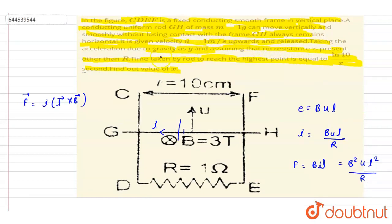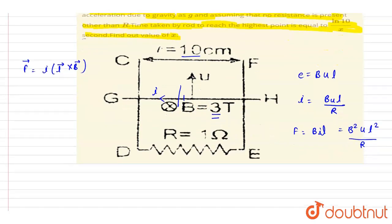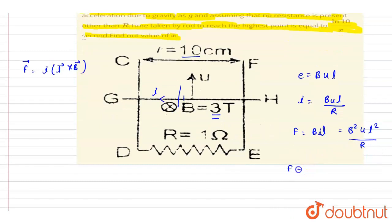B squared u L squared divided by R. So basically you multiply it with this. So here if you see, the B is given, it is 3T, right? L, the length is 10 centimeter. So we can just put the value of B and L. So it will be 9, L is 10 centimeter, so it will be 1 by 10 meter, right? So it will be this...